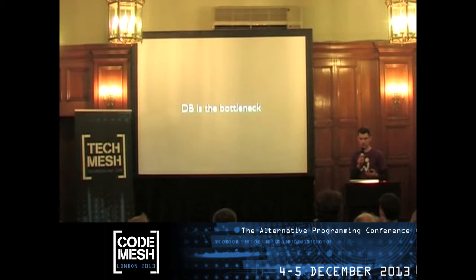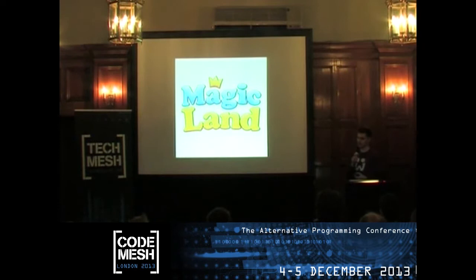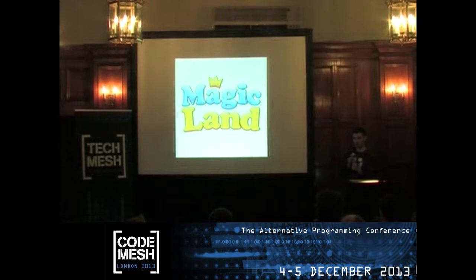So, massive bottleneck in the database, no matter if you shard. We have 16 different shards in our biggest game — 16 different single points of failure, and they're all our bottleneck. At that point, a game called Magic Land came around. This was the first game we did in Erlang, and the first game I did. We took the problems we had in the first games and tried to solve them at the fundamental core.